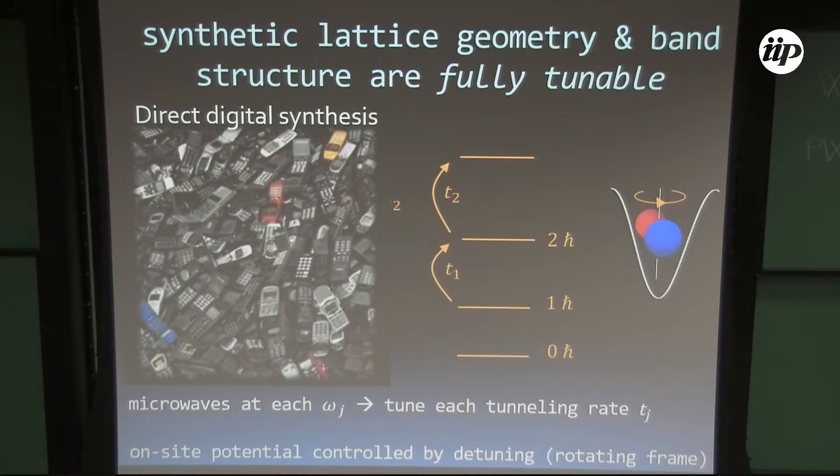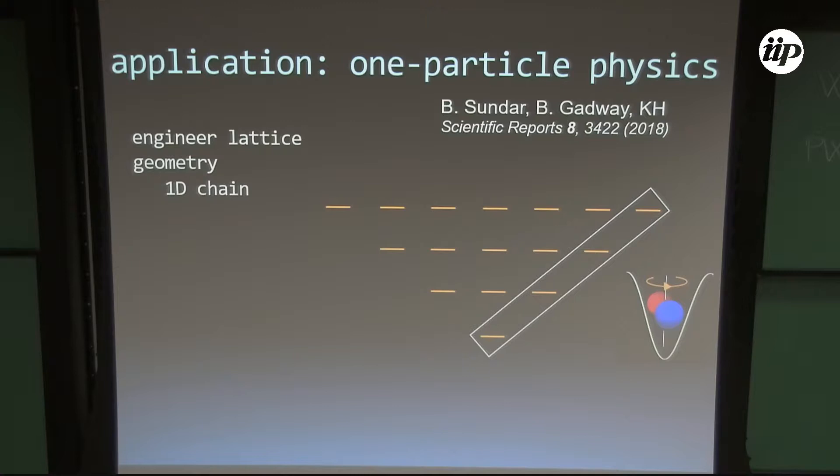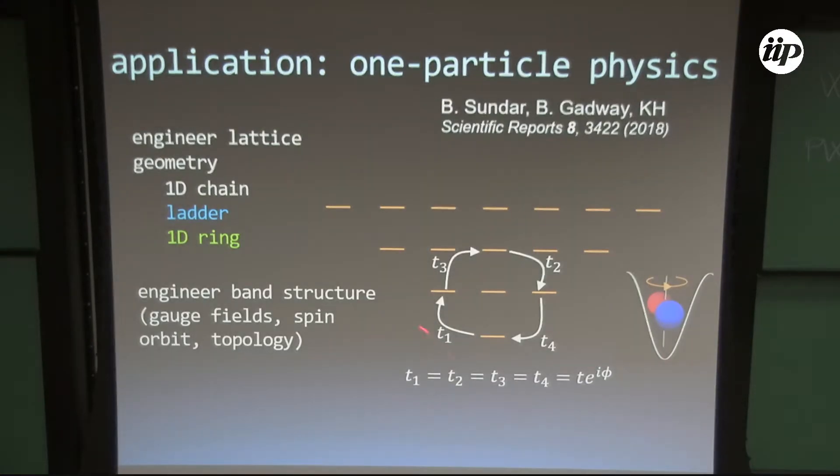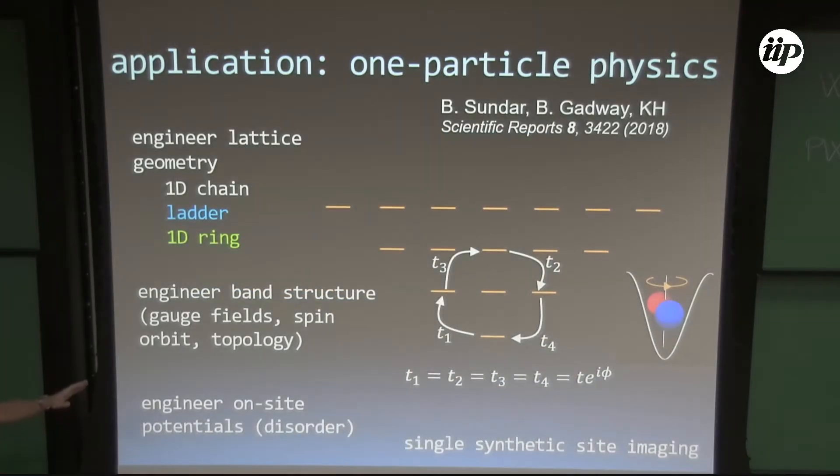So we have a way of just imprinting whatever set of tunnelings we want. So we can engineer our lattice geometries. I showed you the 1D chain, but we could also make a ladder. Or maybe I can do something with periodic boundary conditions and make a ring. Or maybe I want to make a ring, but now I want to put it on a gauge field. And for free, just the same way you can control the tunnelings, you can also do single-site imaging.